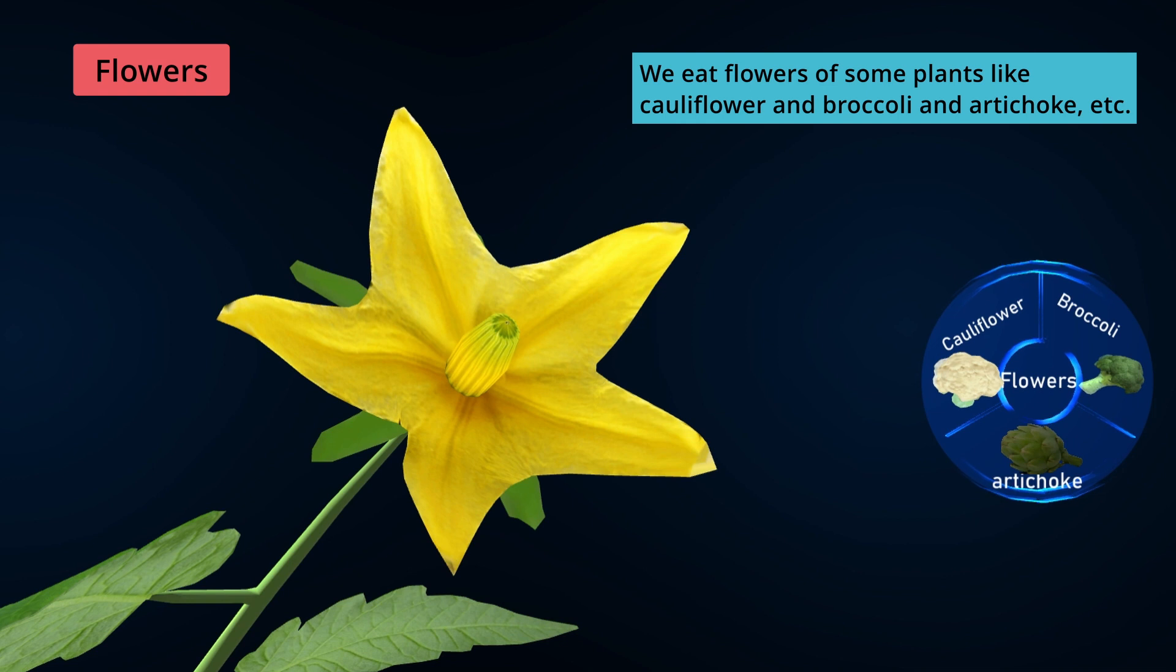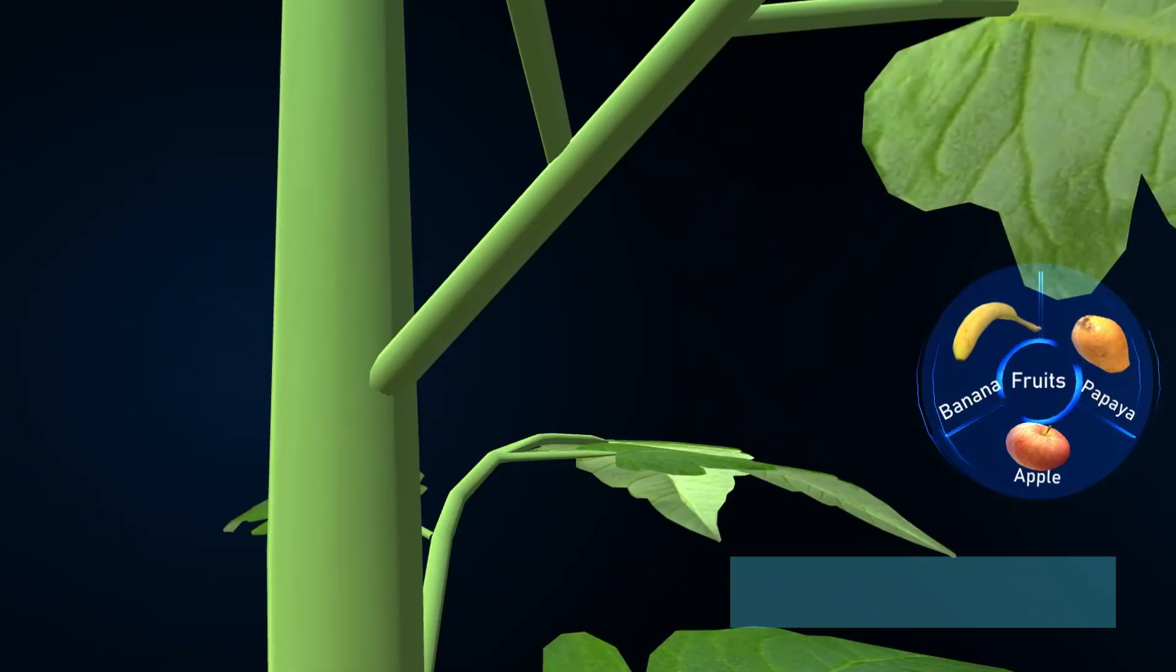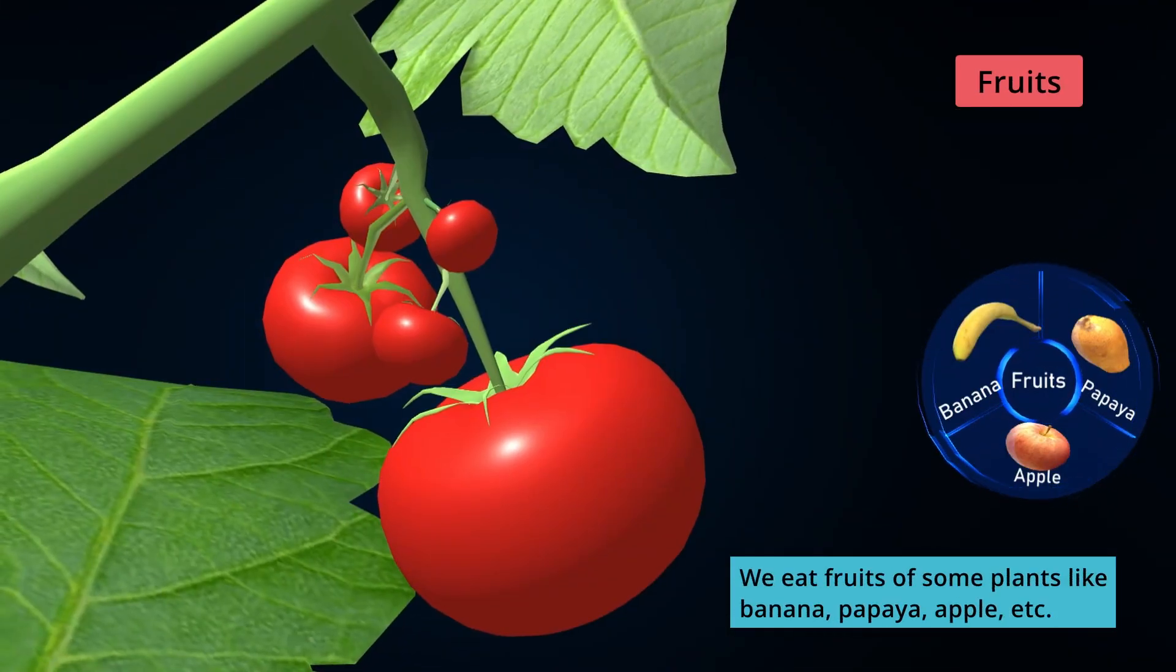We eat flowers of some plants like cauliflower, broccoli, and artichoke. Fruit. We eat fruits of some plants